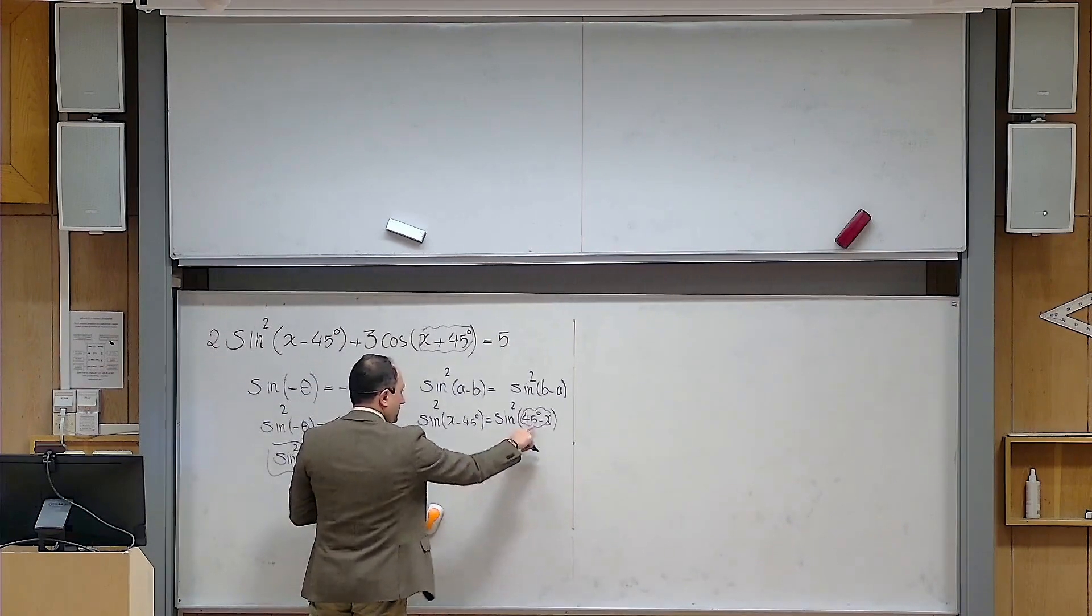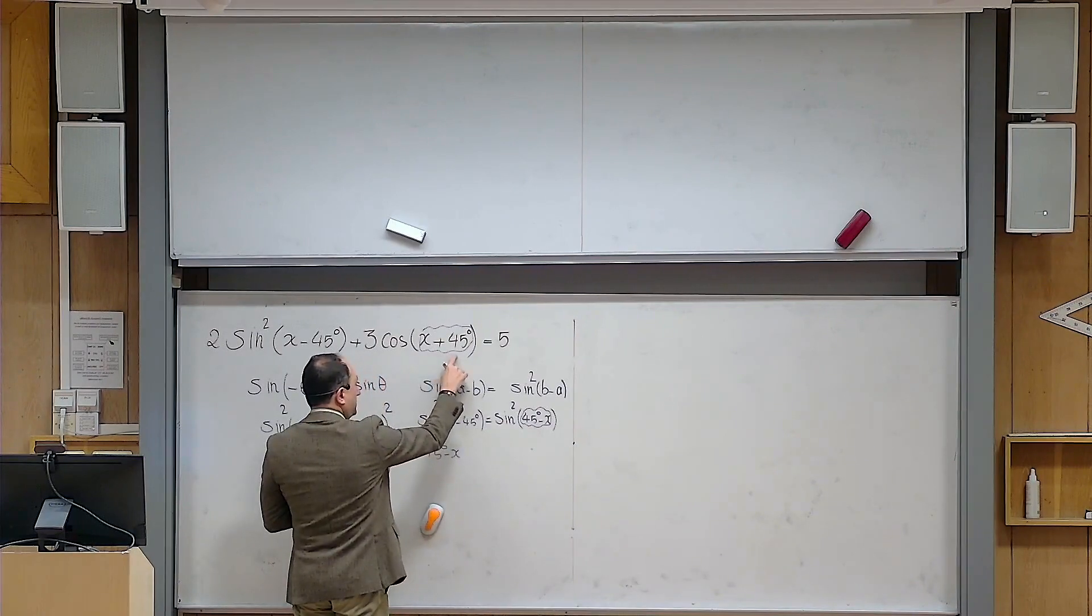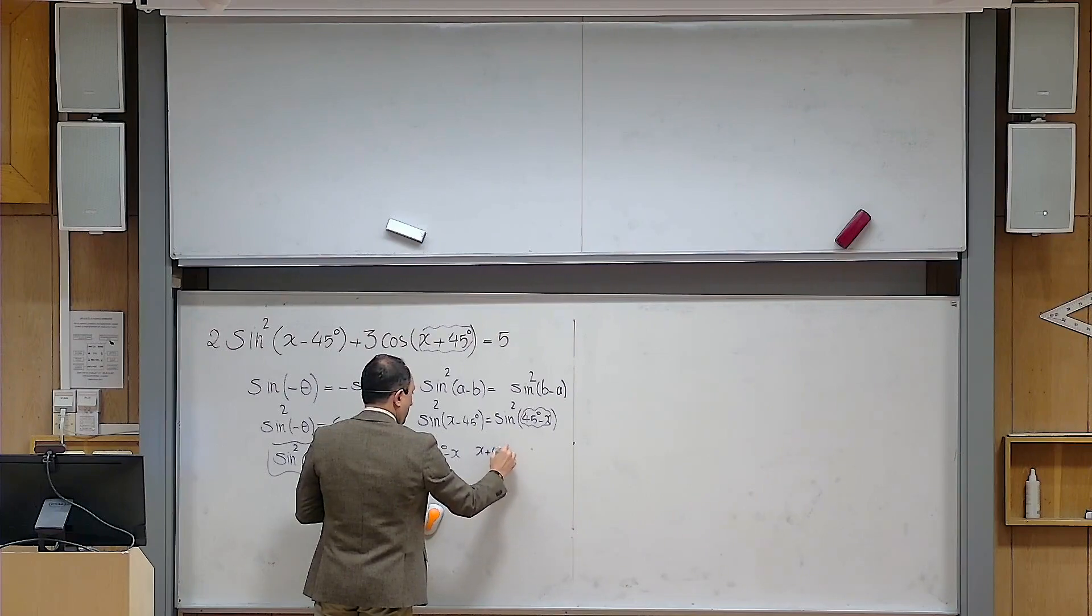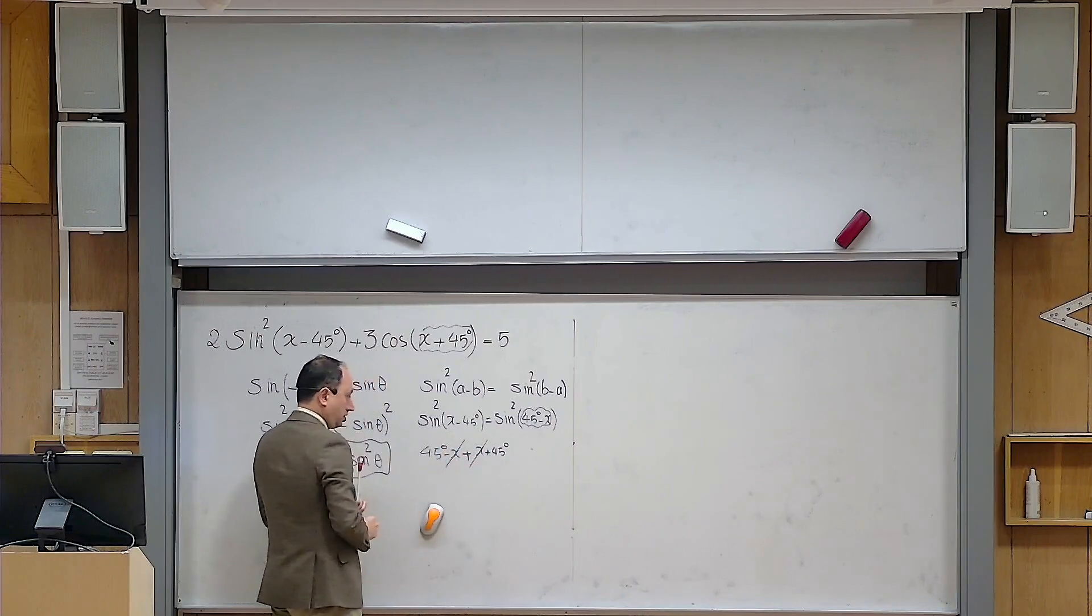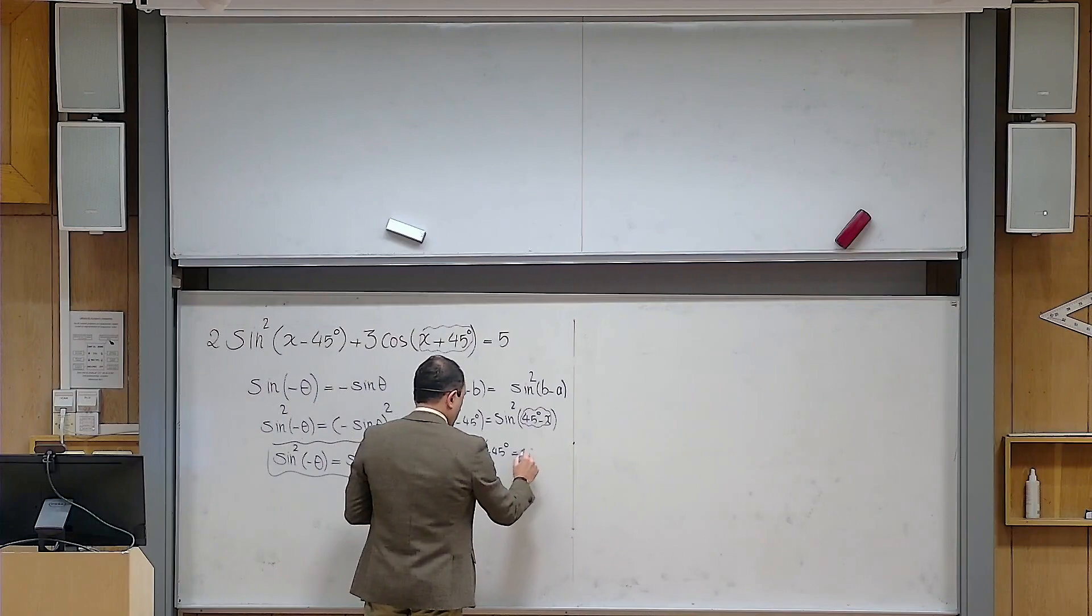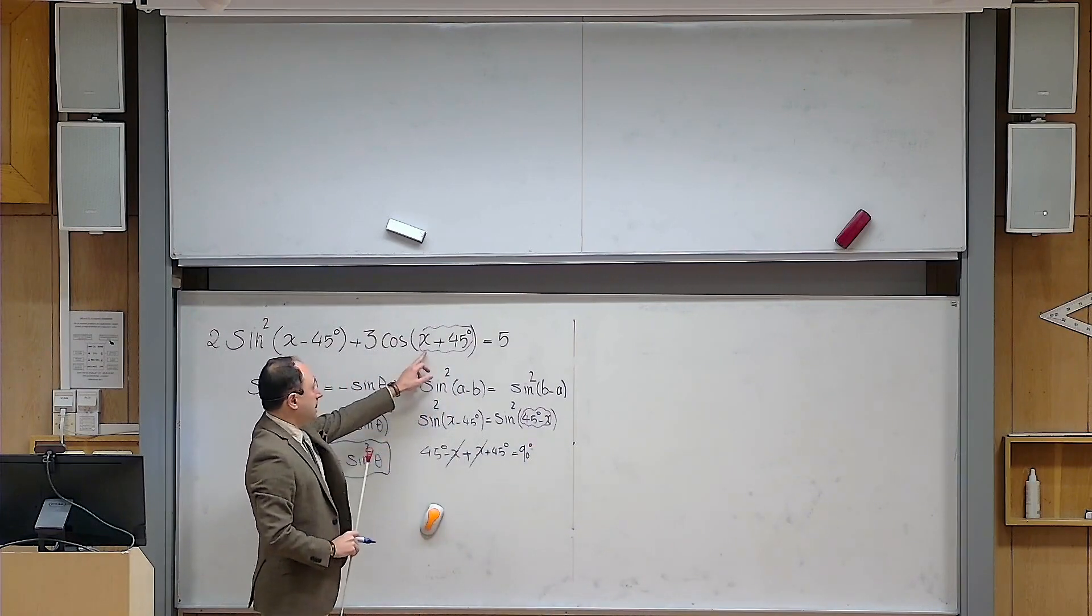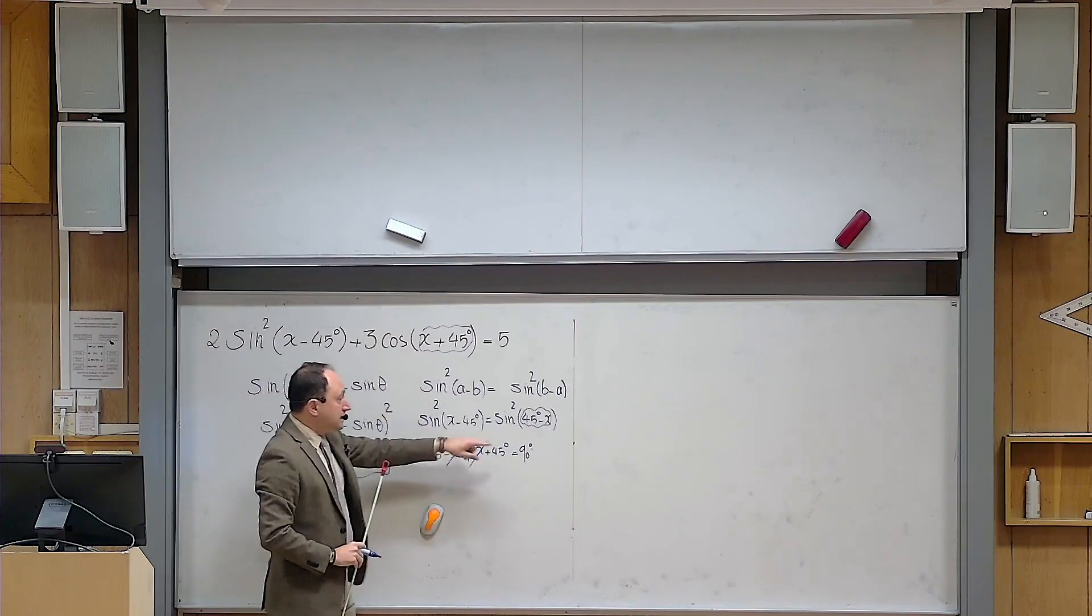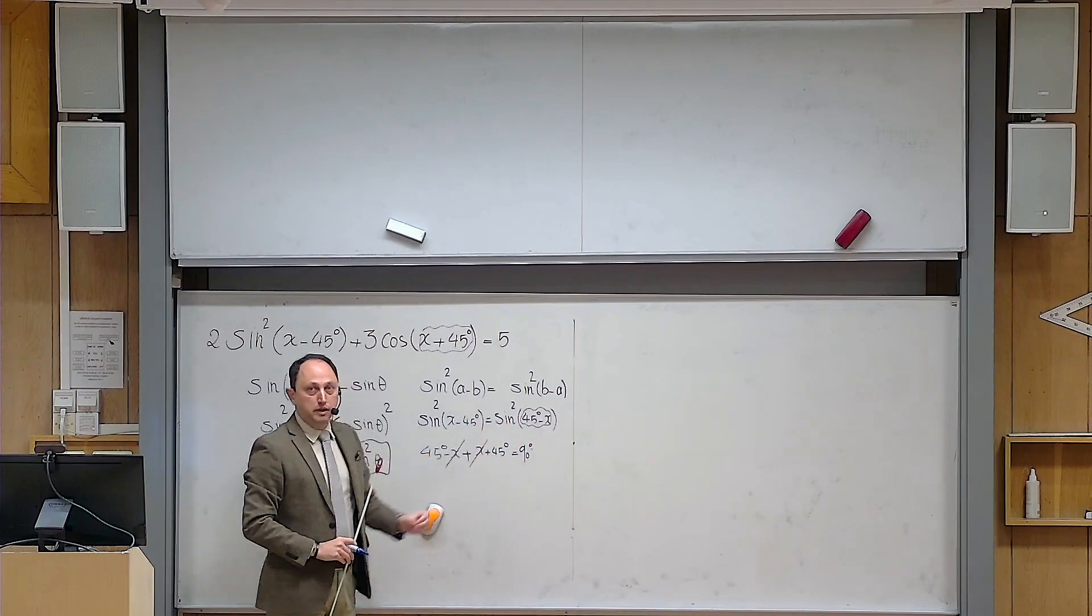The angle that you see here is 45 degrees minus x. The angle that appears in front of cosine is x plus 45 degrees. If I add these together, then minus x and x are gone. 45 plus 45 is 90 degrees. So this means that this angle in front of cosine and this form of the angle in front of sine are complementary.